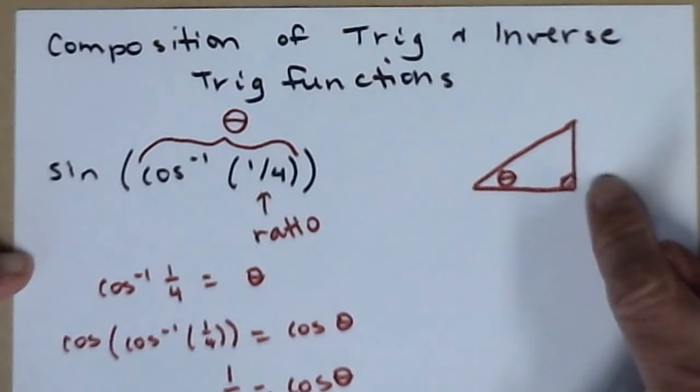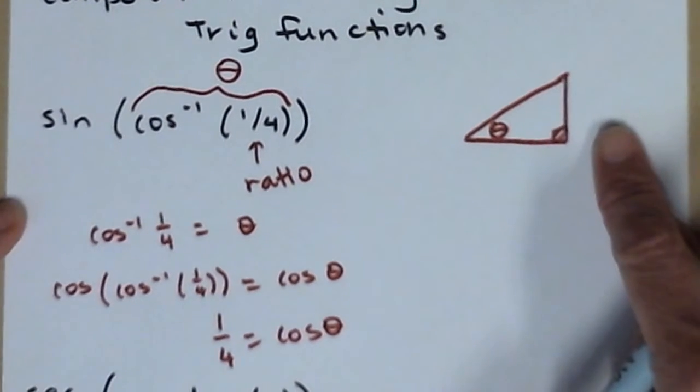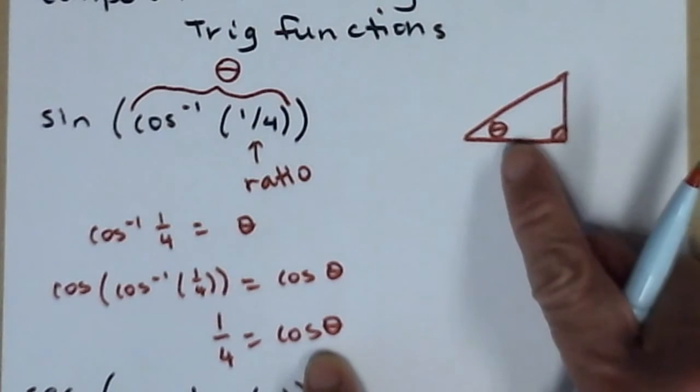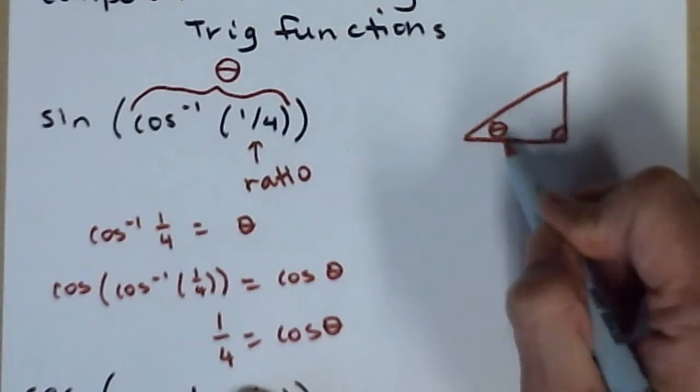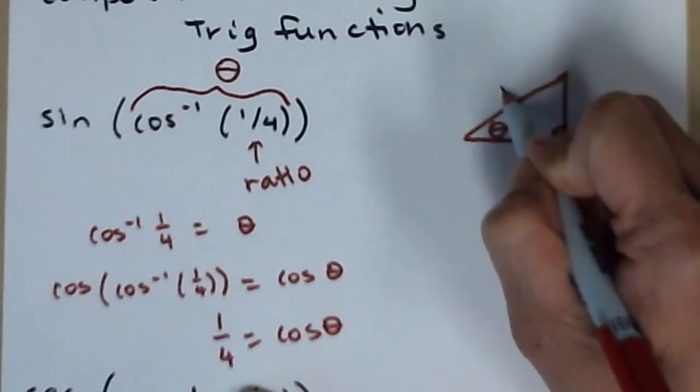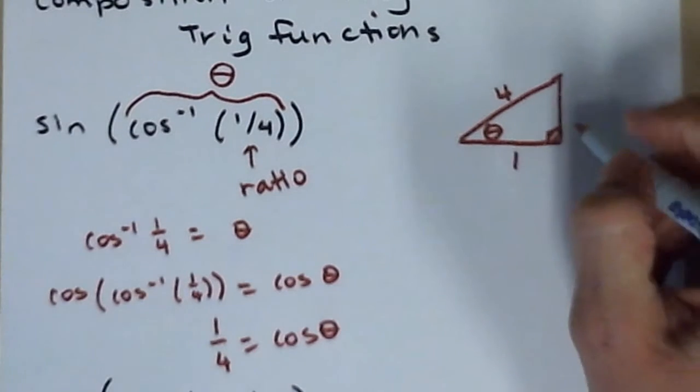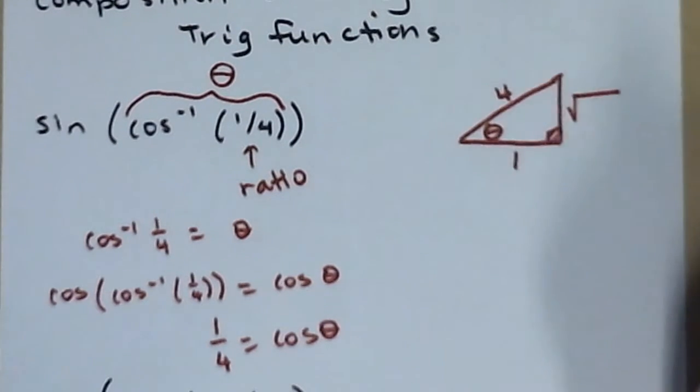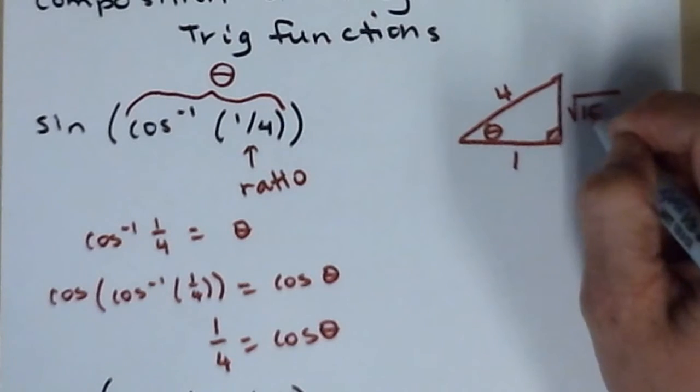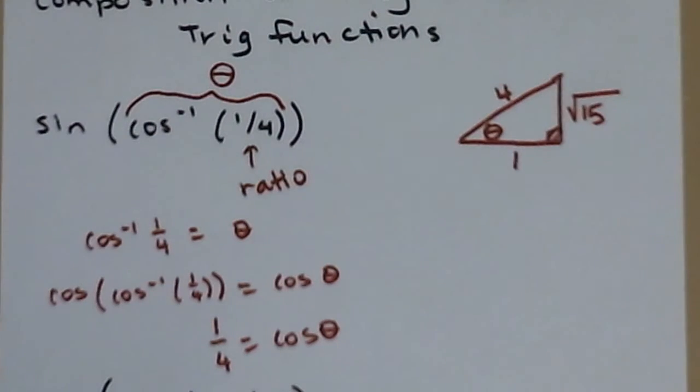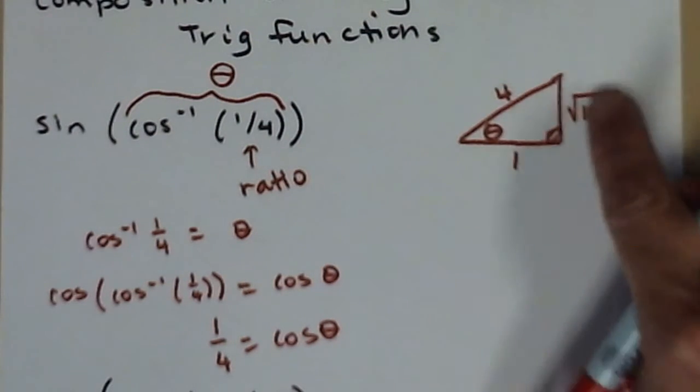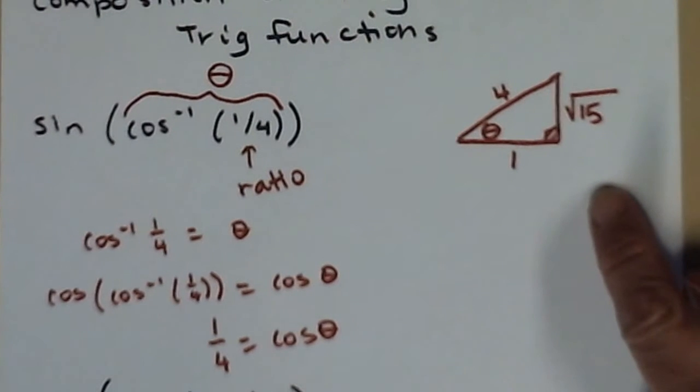When I label the sides of my triangle, I need to label them so that the cosine of theta is one over four. Cosine is adjacent over hypotenuse, so one over four. Then Pythagorean theorem gives you that missing side. Looks like that's square root of 15.